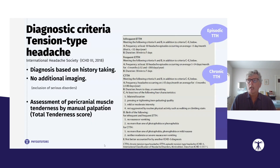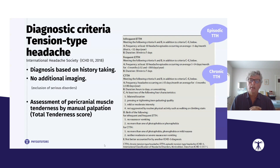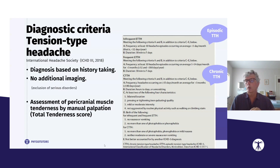Episodic and chronic tension-type headache can be distinguished because they have a different frequency. For the infrequent episodic type, there must be at least 10 headache episodes occurring less than one day per month. The frequent episodic type requires at least 10 episodes occurring on average 1 to 14 days per month.